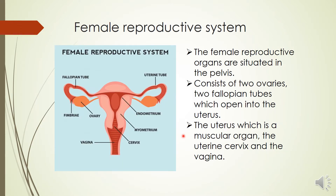Next we are going to learn about the female reproductive system. The female reproductive organs are situated in the pelvis. Unlike the male reproductive system, it is not in the outer part of our body. This consists of two ovaries, two fallopian tubes on either side which open into the uterus, the uterus which is a muscular organ, the uterine cervix, and the vagina.